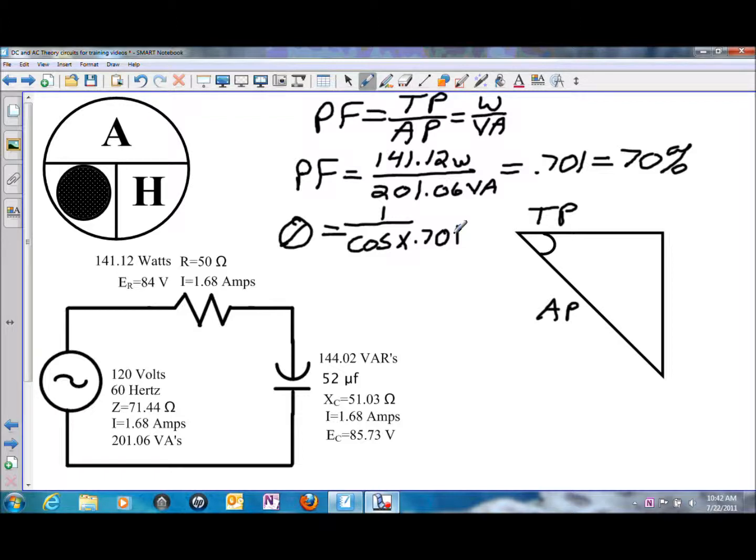Immediately go up and hit the second function, and then hit the cosine, which is the inverse of cosine. Hit the second function one more time, and down on the lower right-hand side, hit answer. And it will throw the previous answer from your calculation, the .701, into the formula for you. And angle theta will then come up as 45.46 degrees.